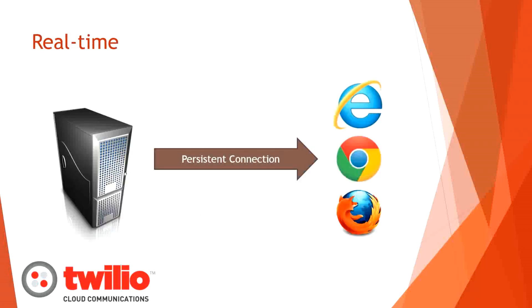Let's start by talking about real-time. Most of us are web developers, and historically the model the web operates in is request-response — a client creates a request, sends it to the server, and the server sends a response back. That pair lives in isolation; the client and server don't know anything about previous or future pairs. But there are scenarios where you want the server to know the client exists, where you want to create a persistent connection over HTTP between clients and servers.